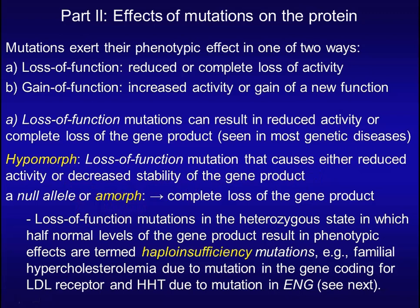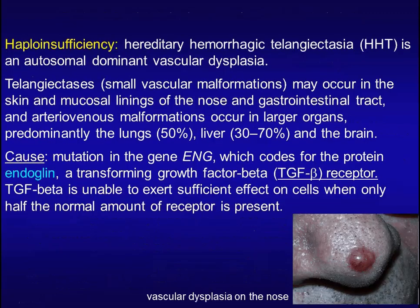Loss of function mutations in the heterozygous state, in which half-normal levels of the gene product result in phenotypic effects, are called haploinsufficiency mutations. For example, familial hypercholesterolemia due to mutation in the gene coding for the LDL receptor, and HHT — hereditary hemorrhagic telangiectasia — due to mutation in endoglin. HHT features small vascular malformations on the skin and mucosal linings of the nose and GI tract. It is caused by mutation in the endoglin gene, which codes for the TGF-beta receptor.